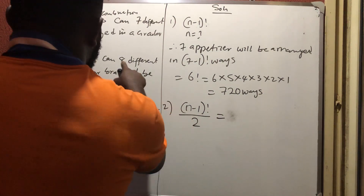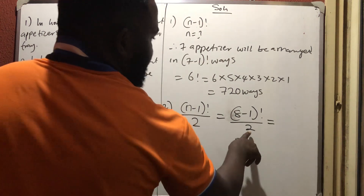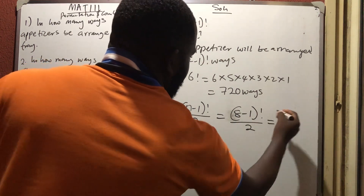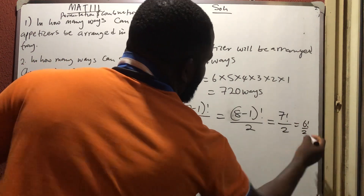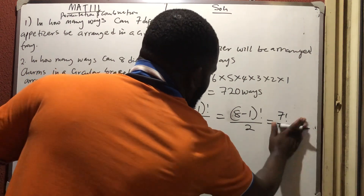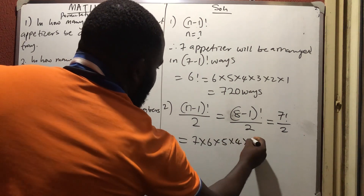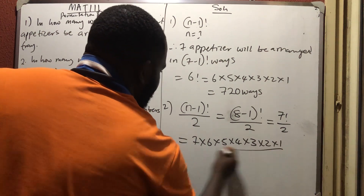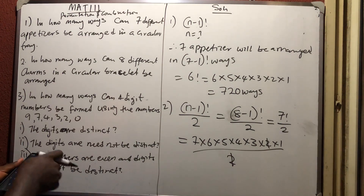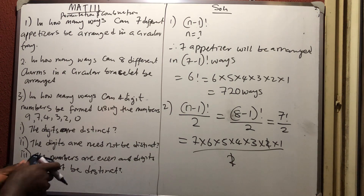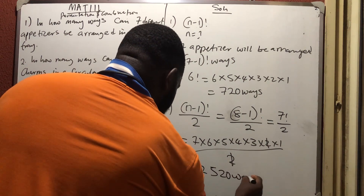We are arranging eight different charms, so it is (8-1)! divided by 2, which is 7! divided by 2. Don't try to cancel — even if it were 6! divided by 2, don't say that gives you 3!. It's not the same thing. So compute 7×6×5×4×3×2×1 divided by 2, and the 2 cancels with the 2 in the factorial expansion, giving 2520 ways.